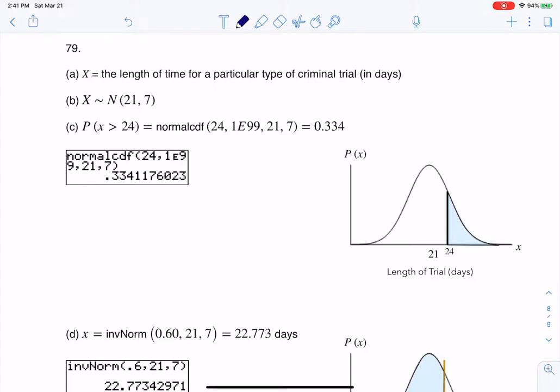Here we were given information on the duration of a particular type of criminal trial. We were told it was normally distributed, that it had an average length of 21 days and a standard deviation of 7.